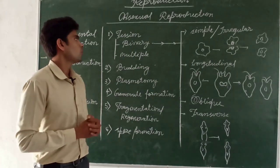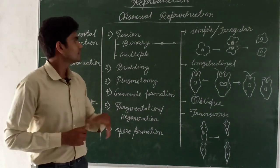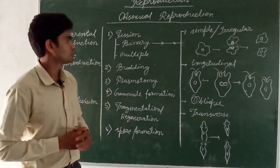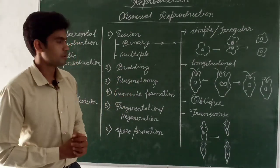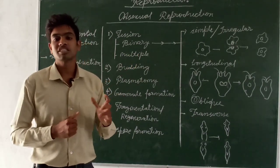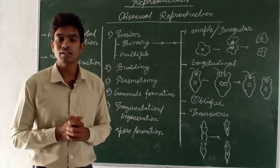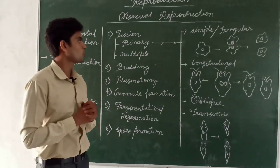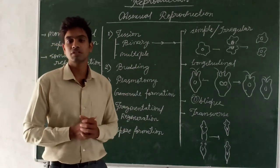In fission, the nucleus and cytoplasmic elements completely divide to form small daughter cells. Based on how many daughter cells are produced, fission is divided into two types: binary fission and multiple fission. In binary fission, when the organism attains maximum size, it divides into two genetically and morphologically identical daughter cells.